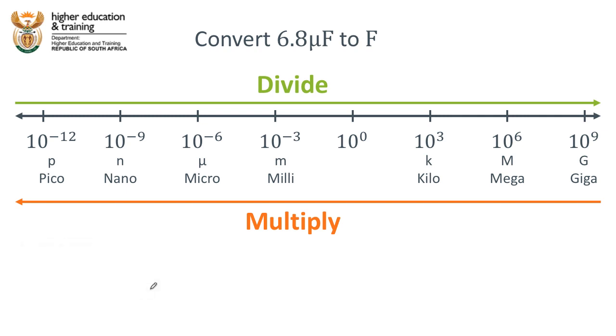So in this case we're going from microfarads over there up to farads, no prefix, in other words the midpoint of the number line. We are moving from the smaller unit to the bigger unit which means we're moving in the divide direction.